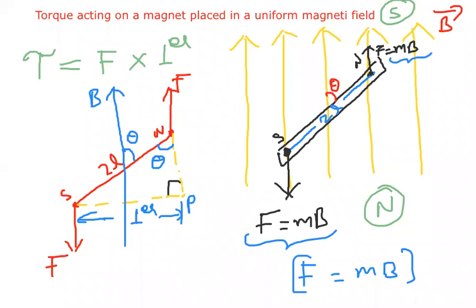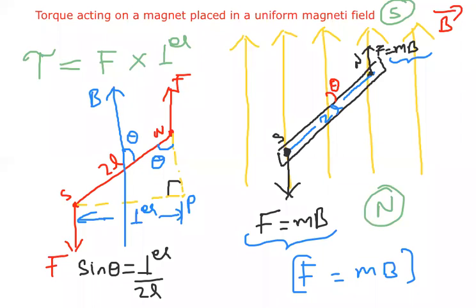From that, perpendicular equals 2L sin theta. I now have the perpendicular distance and know the force value. Torque equals force into perpendicular distance. So tau equals F times 2L sin theta, which gives tau equals mB times 2L sin theta.